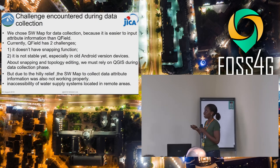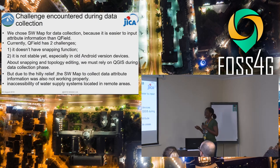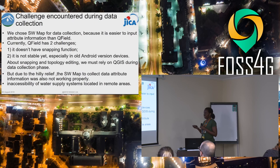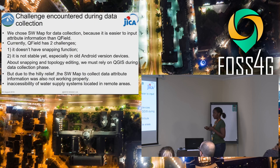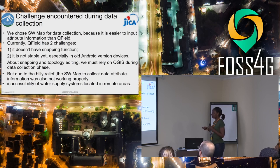The challenges we encountered during data collection were mainly that QField doesn't have a snapping function, so you can't draw a network without a snapping option. It's also not stable for old Android versions. Additionally, SW Map for collecting data attribute information was not working properly, so we had to adapt ourselves. And some water supply systems were located in remote areas.